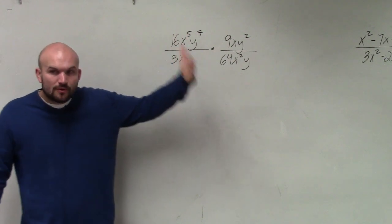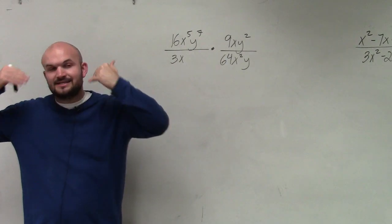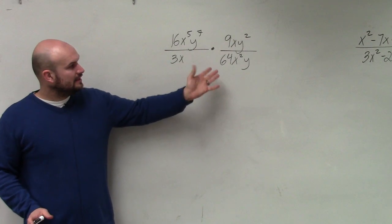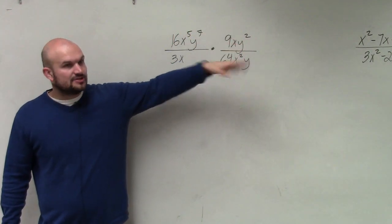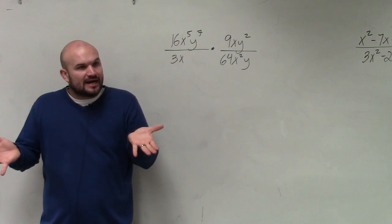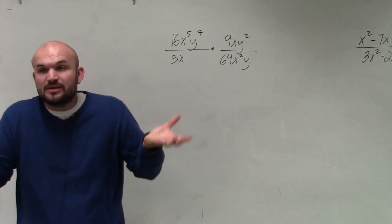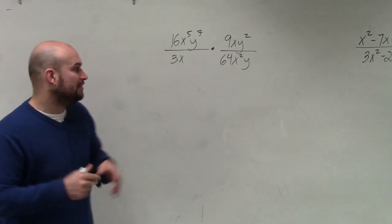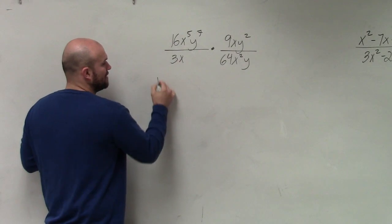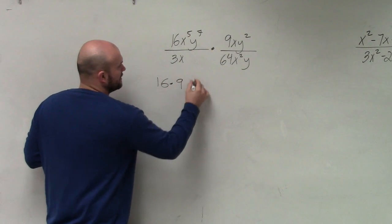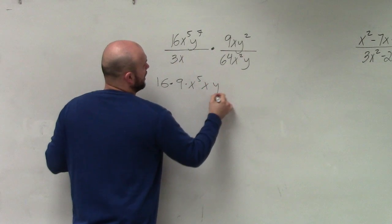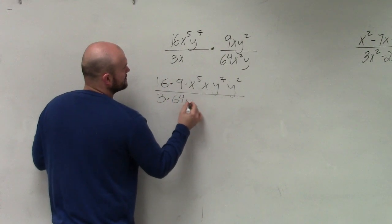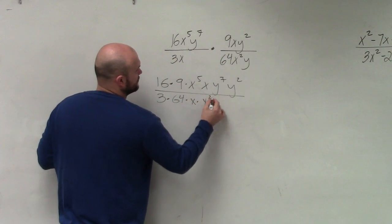So Cameron, when you're looking up here — what I really want you guys to get the idea of — notice that this problem has no addition or subtraction. All we're basically doing is multiplying this times this. When there's no term separated by addition or subtraction, we're just going to be using our rules of exponents. So if we're going to apply the rules of exponents, let's group things that we can apply. What I'm going to do is, without actually doing anything, I'm going to do 16 times 9, x to the 5th times x, y to the 7th times y squared, all over 3 times 64, 4 times x times x squared times y.